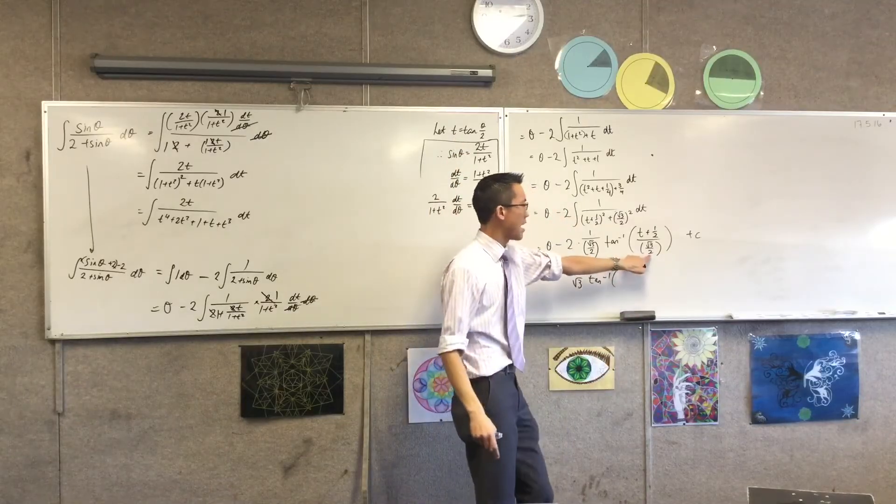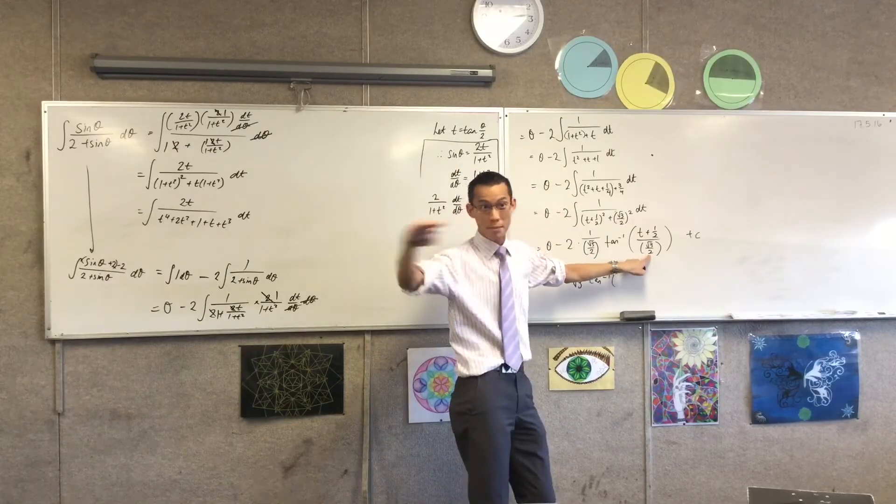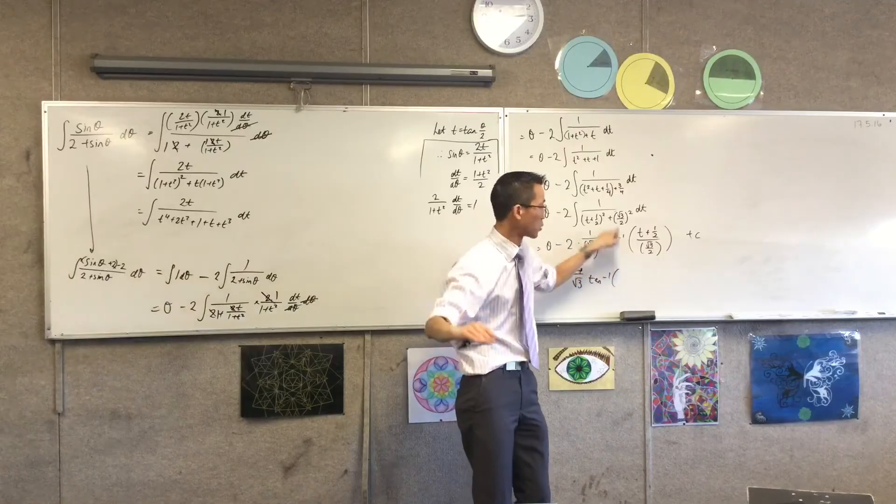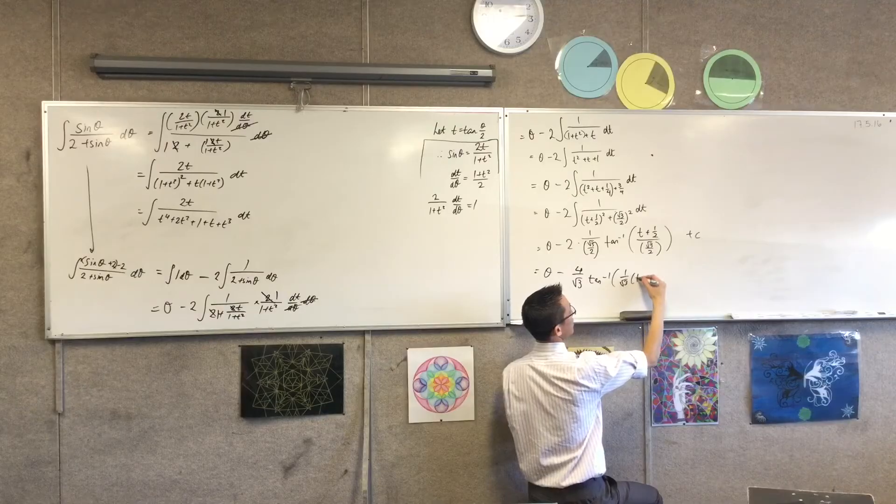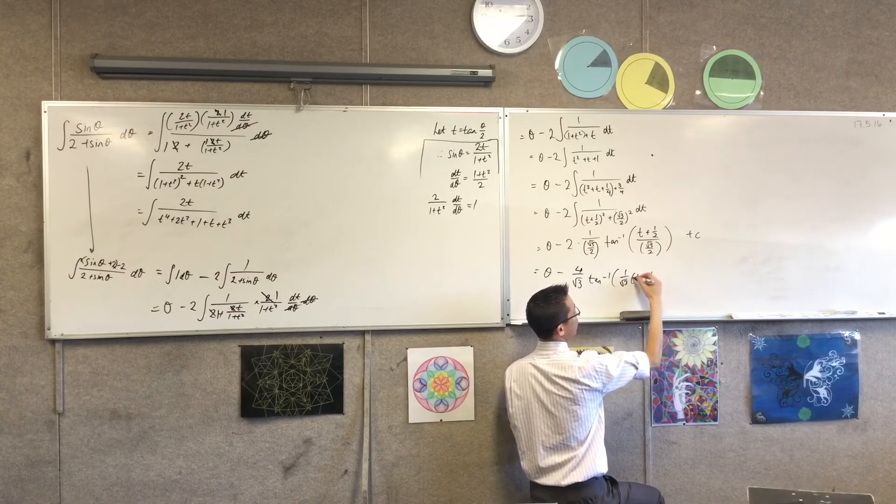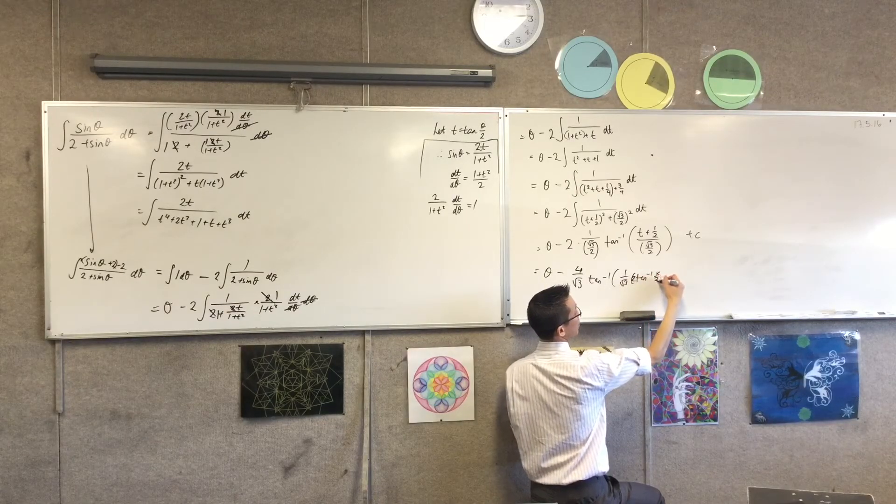And at the same time, that dividing by two underneath the denominator is actually multiplying through by two. So I'm going to write that like this. One on root three. Tan inverse. Sorry, two. Tan inverse. Theta on two.